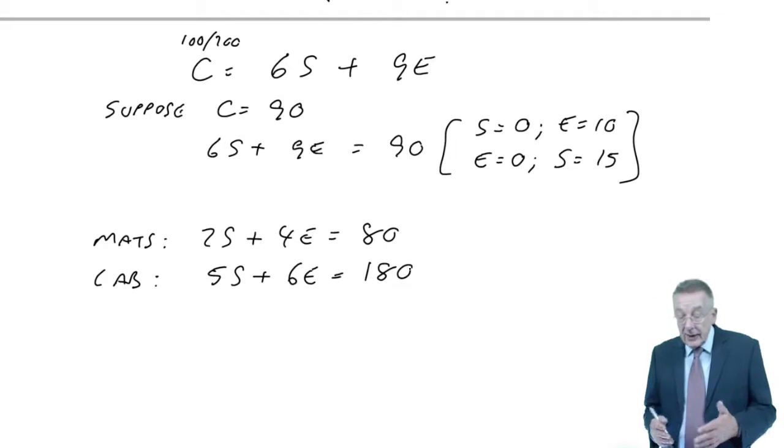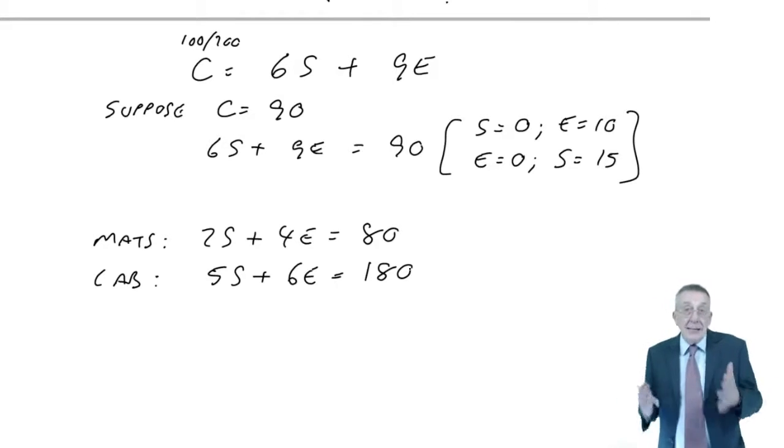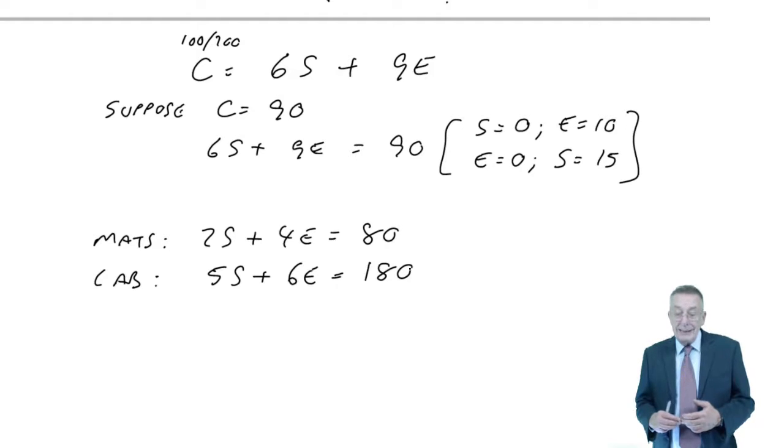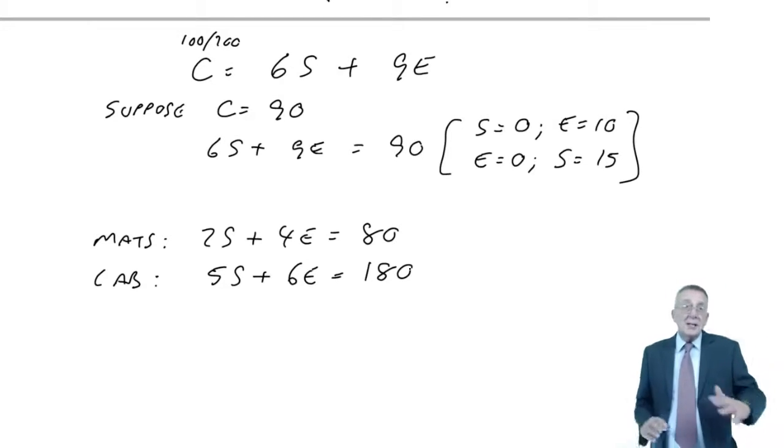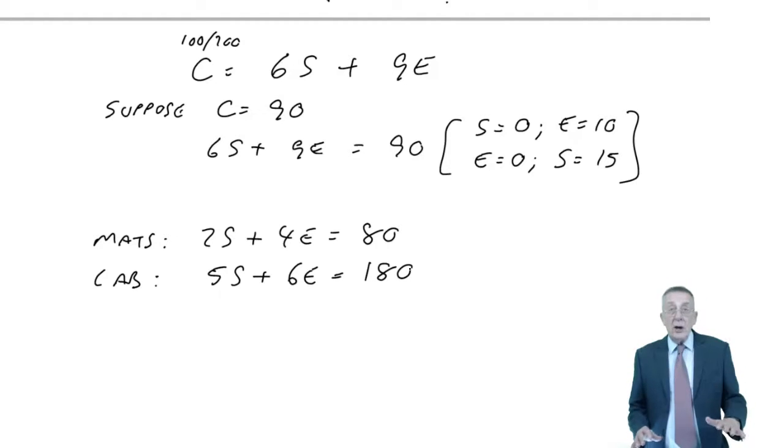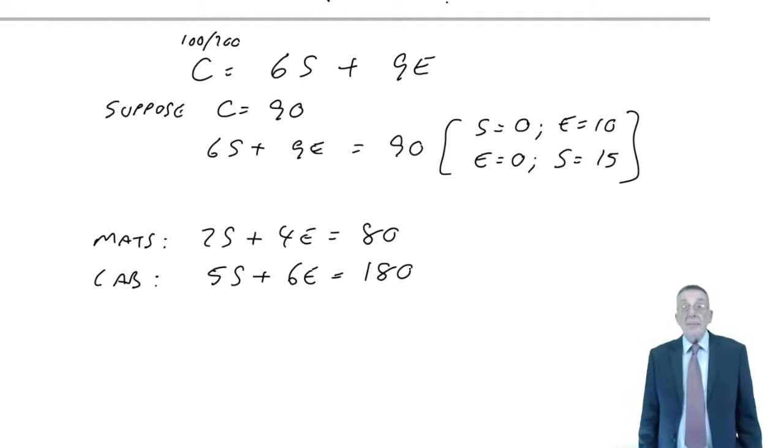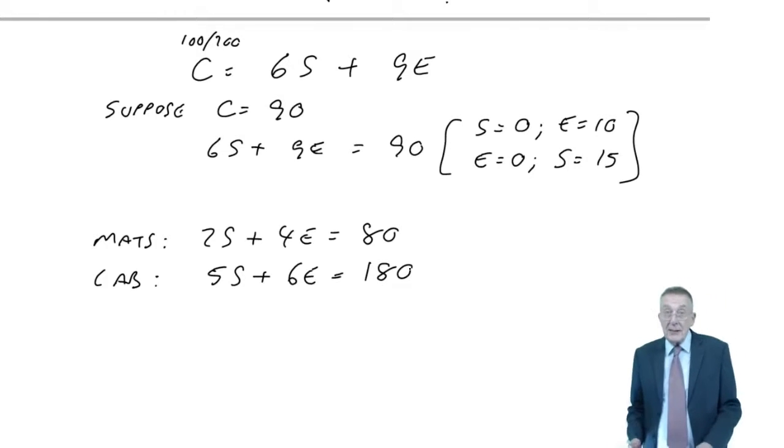Well, the materials equation was 2S plus 4E equals 80. The labour equation 5S plus 6E equals 180. And again, I know it may have been a long time since school, you may have hated it then. But if you have two equations like that, you should be able to calculate what the values of S and E are that satisfy both equations.